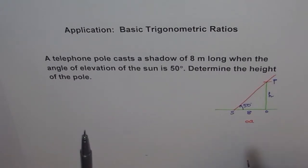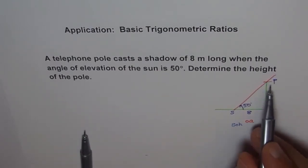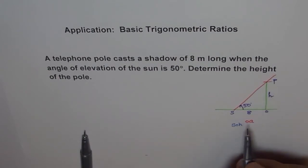Remember SOH CAH TOA? I'm showing you the way you should be doing the problem. SOH CAH TOA: sine is opposite over hypotenuse, cosine is adjacent over hypotenuse, and tan is opposite over adjacent. I know opposite and adjacent, so the best thing to use is tan.